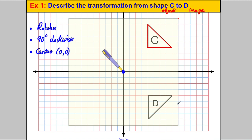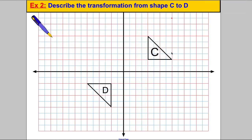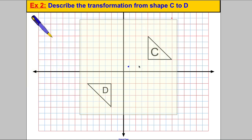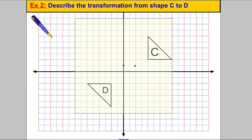Let's look at a more complicated example — example 2. We're describing the transformation from shape C to D again. I think it's a rotation because the shape seems to have turned — it may be a reflection as well — but I'm going to try and see if it's a rotation. So I'm going to get my tracing paper out and trace the shape.